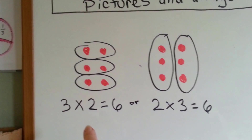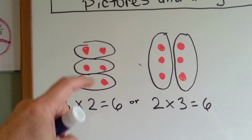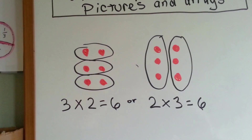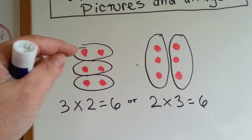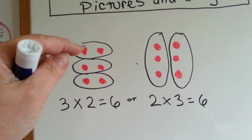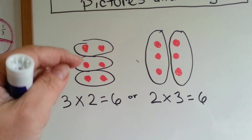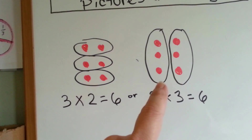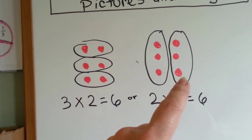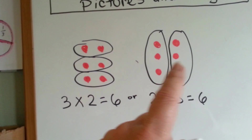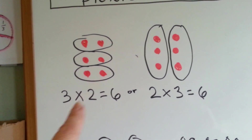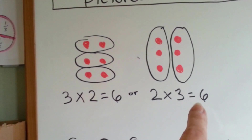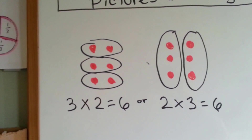Look at this problem right here. There are six red dots here and six red dots here. The only difference is I circled them in different ways. On this side, I grouped them two at a time and made three circles. On this side, I grouped them three and made two circles. So three times two equals six, or two times three equals six. That's the commutative property.